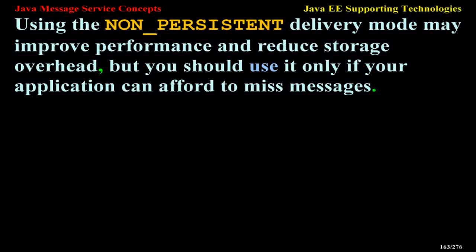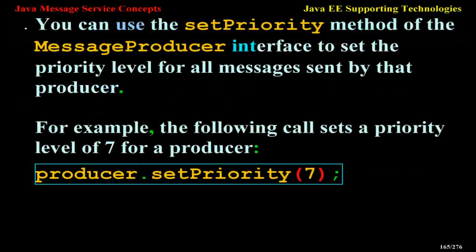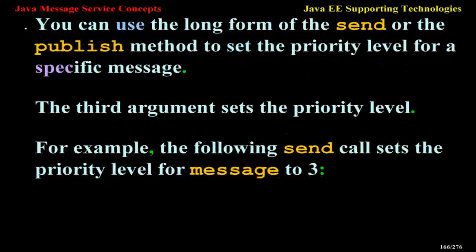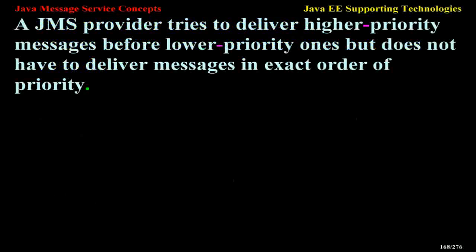Setting Message Priority Levels. You can use message priority levels to instruct the JMS provider to deliver urgent messages first. You can set the priority level in two ways: use the setPriority method of the MessageProducer interface to set the priority level for all messages sent by that producer, for example producer.setPriority(7); or use the long form of the send method to set the priority for a specific message, for example producer.send(message, DeliveryMode.NON_PERSISTENT, 3, 10000). The 10 levels of priority range from 0 (lowest) to 9 (highest). The default level is 4. A JMS provider tries to deliver higher priority messages before lower priority ones but does not have to deliver messages in exact order of priority.